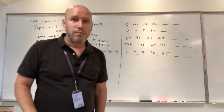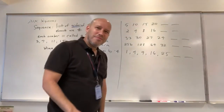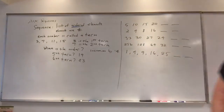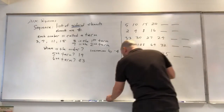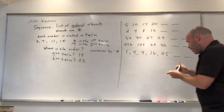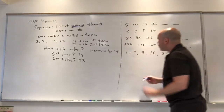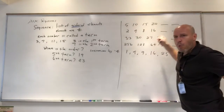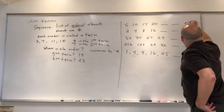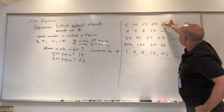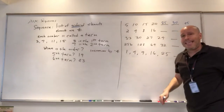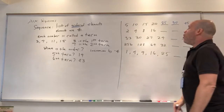We're back. The first thing I want to know is: what is the order? Let's use a different color — blue. What's the order in the first sequence? You said it's plus five, so the next two terms are 25, 30. What about the second sequence — what was the order?